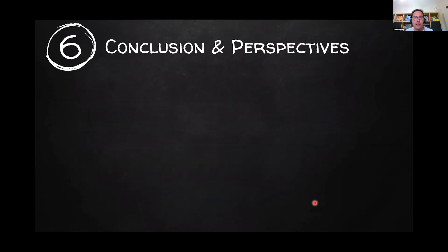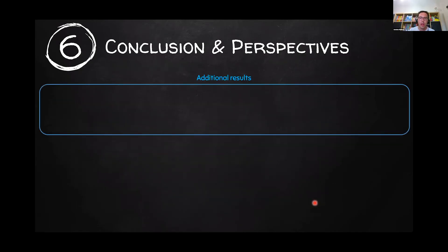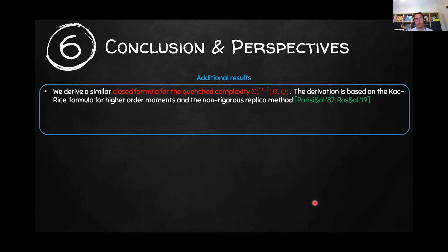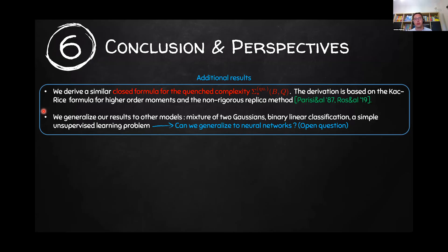Let me conclude with two additional results from the paper. First, we also have a closed formula for the quenched complexity — the typical value, which is the most interesting one. However, our derivation of the quenched complexity is not rigorous; it is based on the replica method from statistical physics, which requires computing higher-order moments of the complexity, making it a non-rigorous trick. We also generalize the results to some other models. Generalizing to neural networks with more than one node is something we are not able to do at the moment, but it is an interesting open question.